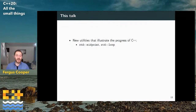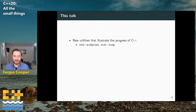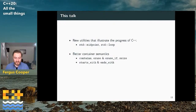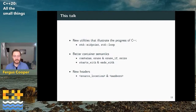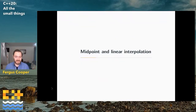So this talk will cover some new utilities that illustrate the great progress C++ is making. I'm going to talk about midpoint and lerp — lerp being linear interpolation — better container semantics, and a couple of new headers: source location and numbers.